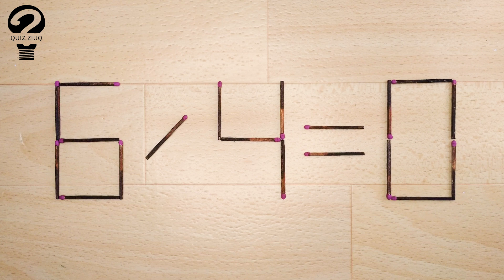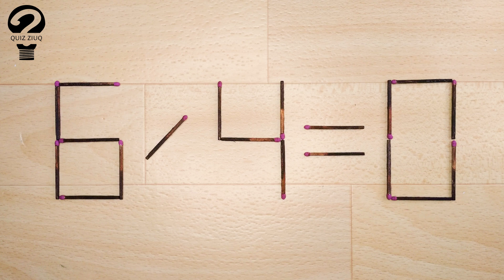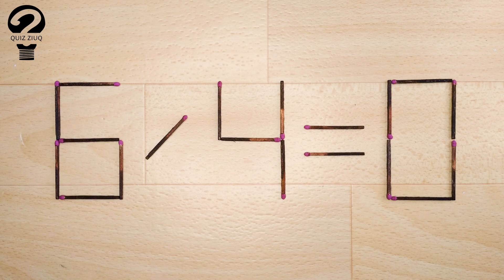Here's the next puzzle. We have the following equation: 6 divided by 4 equals 0. Our equation is incorrect. We need to move one matchstick to make our equation correct.